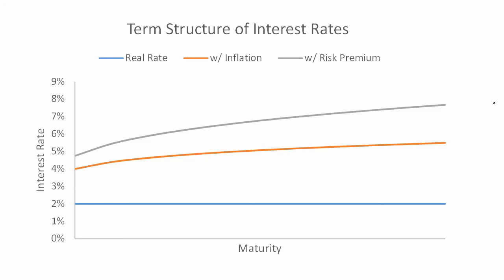In this figure, I've plotted the term structure of interest rates. On the x-axis we've got the maturity of a series of bullet bonds, and on the y-axis we've got the interest rate of each one of those bullet bonds.